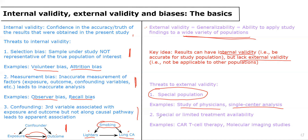The second threat to external validity is if a special or limited treatment is used. For example, if a study shows CAR T cell therapy leads to much improved cancer survival for a special type of cancer, it may be accurate in that study and truly might lead to improved survival for that form of cancer. But there may be a lack of external validity because not everyone can access CAR T cell therapy, and those results may not be applicable to a wide variety of populations. Similarly, molecular imaging studies can help detect disease, but are concentrated in large academic centers and may not represent health delivery across our country and many countries across the world.